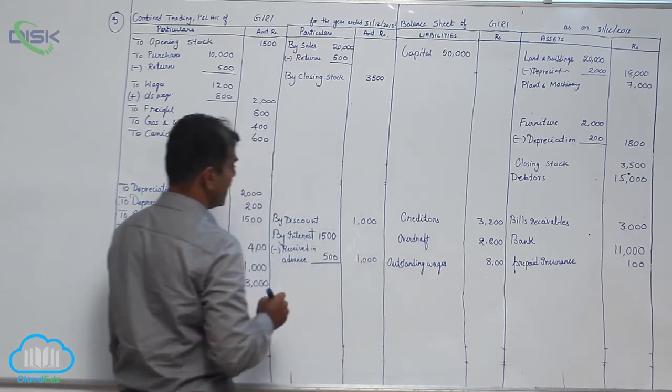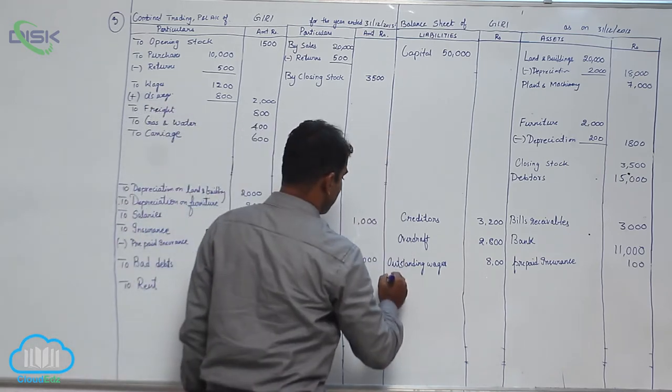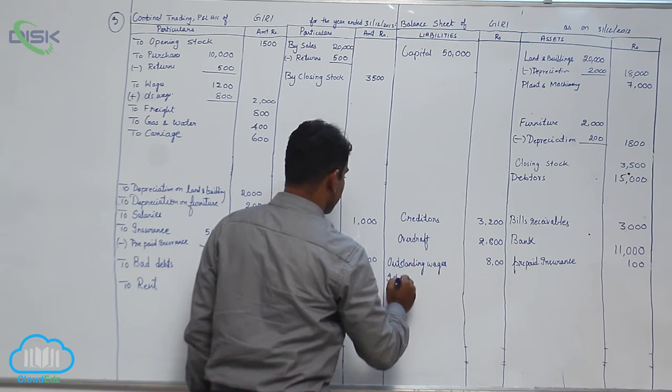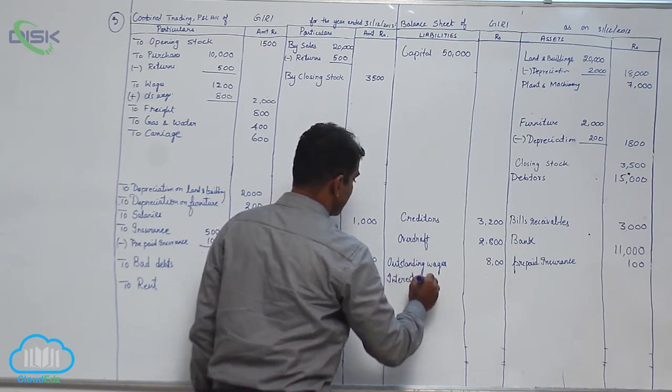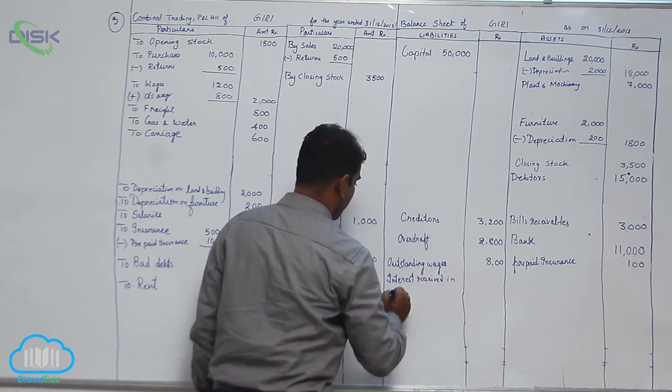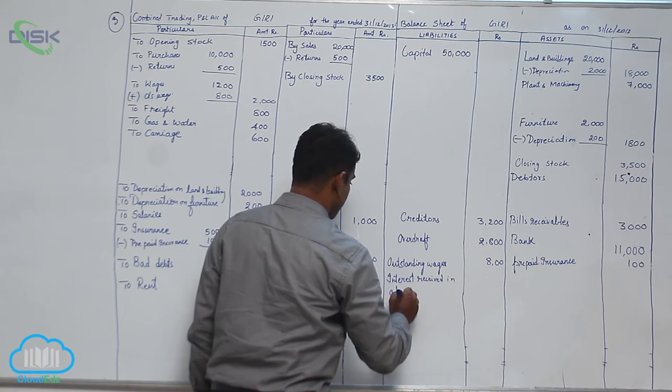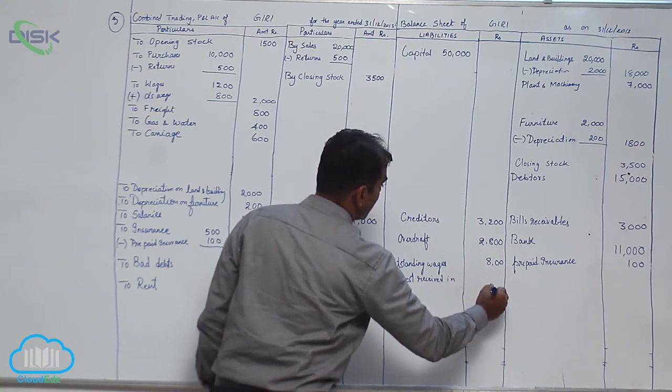Next, we have to write it on the liability side. On the liability side, we write interest received in advance 500. That completes the problem.